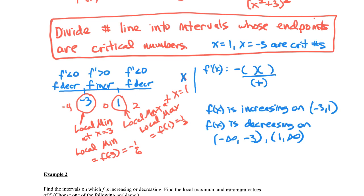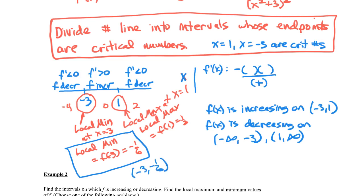The local minimum is −1/6 — a common mistake is saying the local minimum is −3, but −3 is the x-value, not the minimum. The local minimum value is −1/6, and you could also state it as occurring at x = −3 with value −1/6. Similarly, the local maximum value is 1/2.